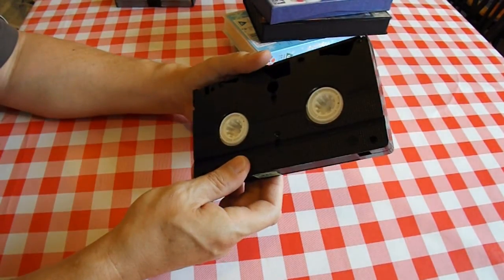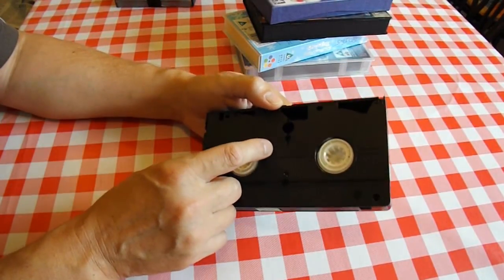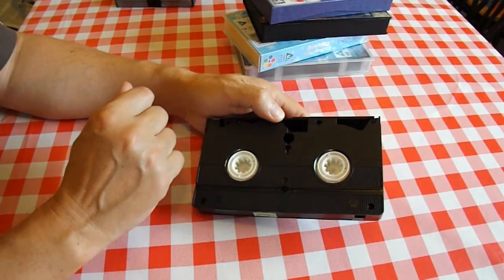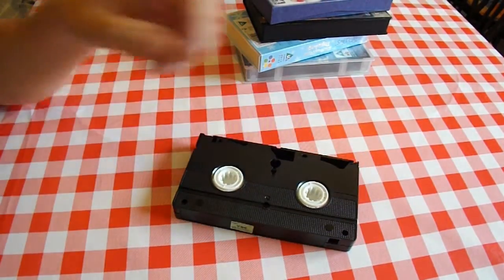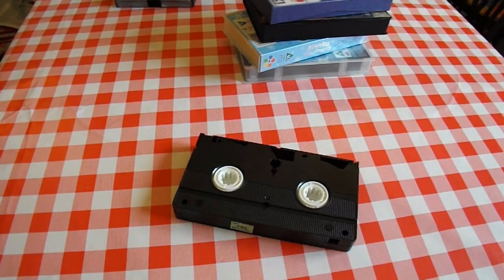Some of them I've noticed have anti-tamper screws but looking at this one I can see straight away it's just an ordinary cross-head screw. So with a bit of luck, it might come apart easily.